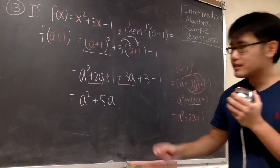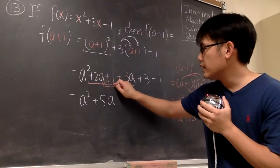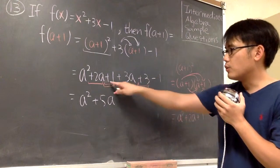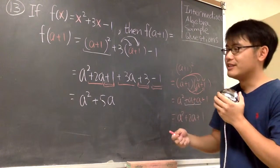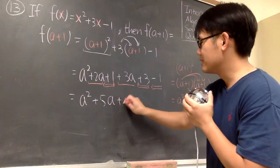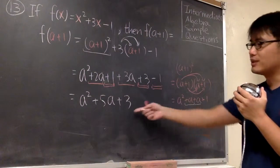For the numbers, here we have plus 1 and then plus 3. So 1 plus 3, that's 4, and then minus 1. Altogether, that's 3. 1 plus 3 is 4, and then minus 1, that's 3.